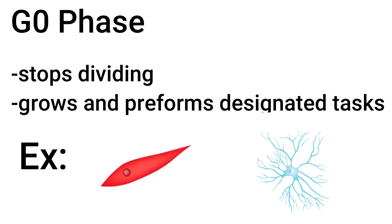The first possible path that we will discuss is the G0 phase. This is when the cell stops dividing and instead grows and performs designated tasks. These types of cells are mature cardiac muscle cells or nerve cells.